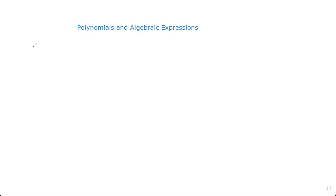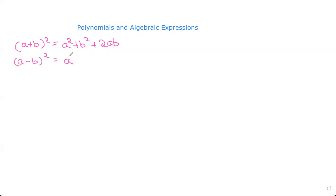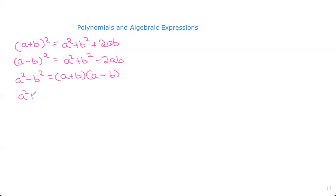The first thing I'm going to teach you is some identities. What is (a + b) whole square? That is a squared plus b squared plus 2ab. What is (a - b) squared? This is a squared plus b squared minus 2ab. And a squared minus b squared is (a + b) into (a - b). And a squared plus b squared is (a + b) whole square minus 2ab.